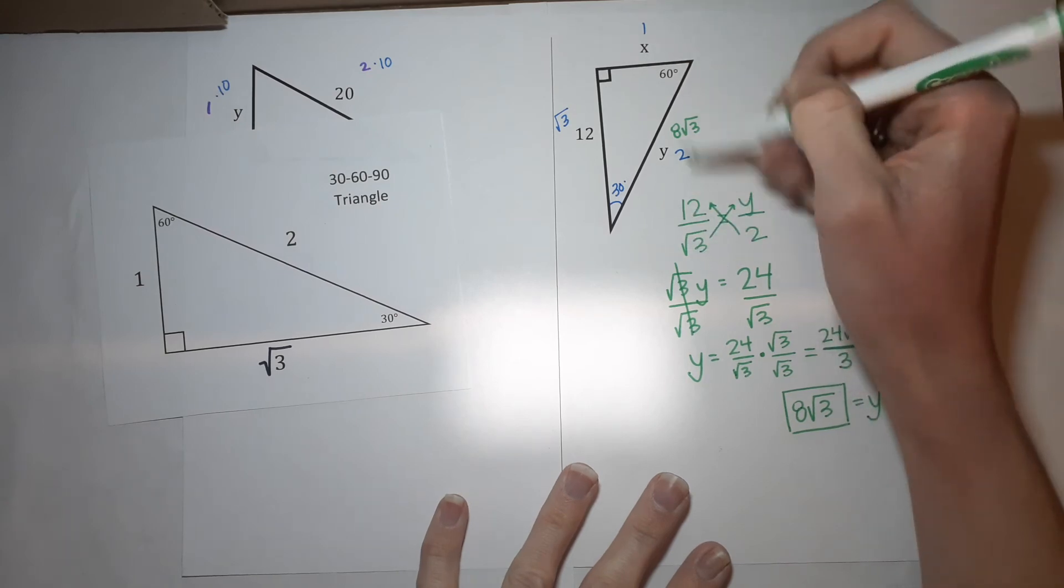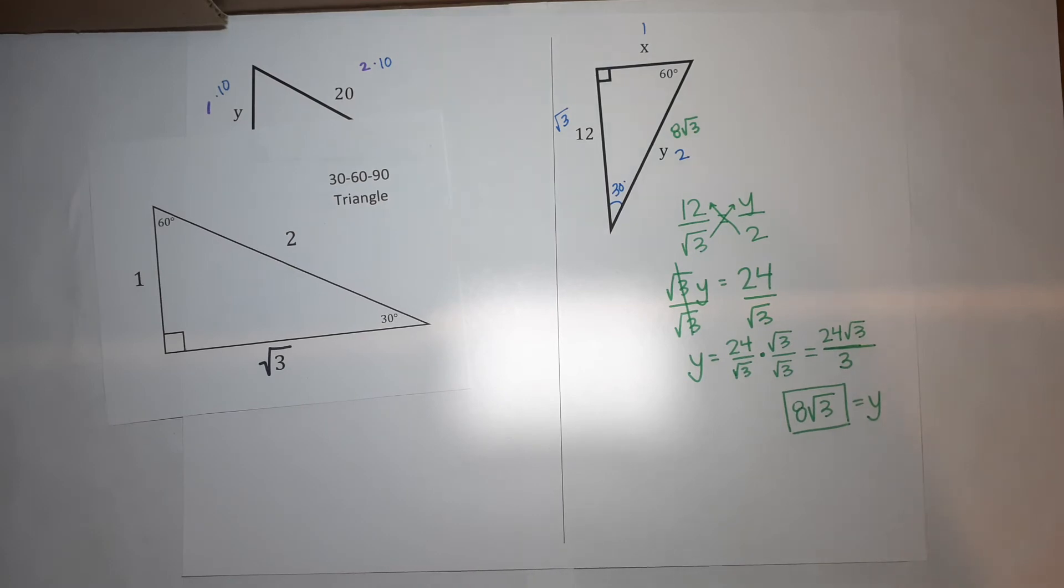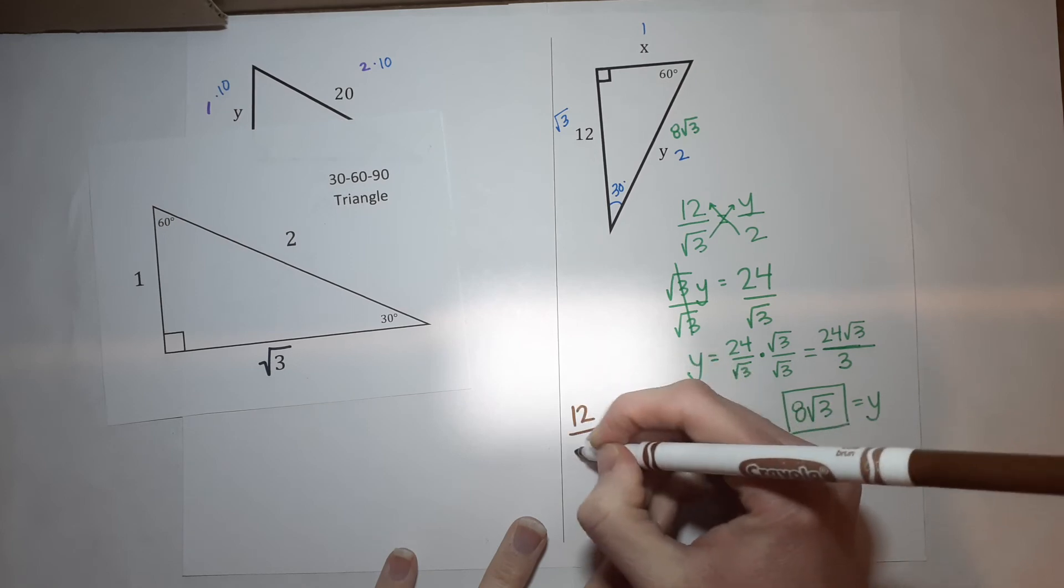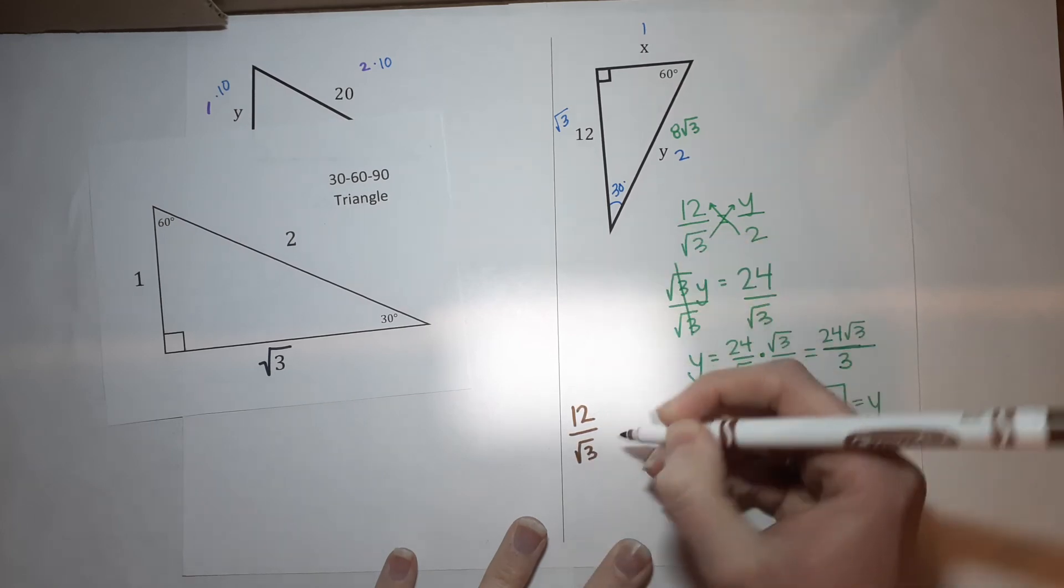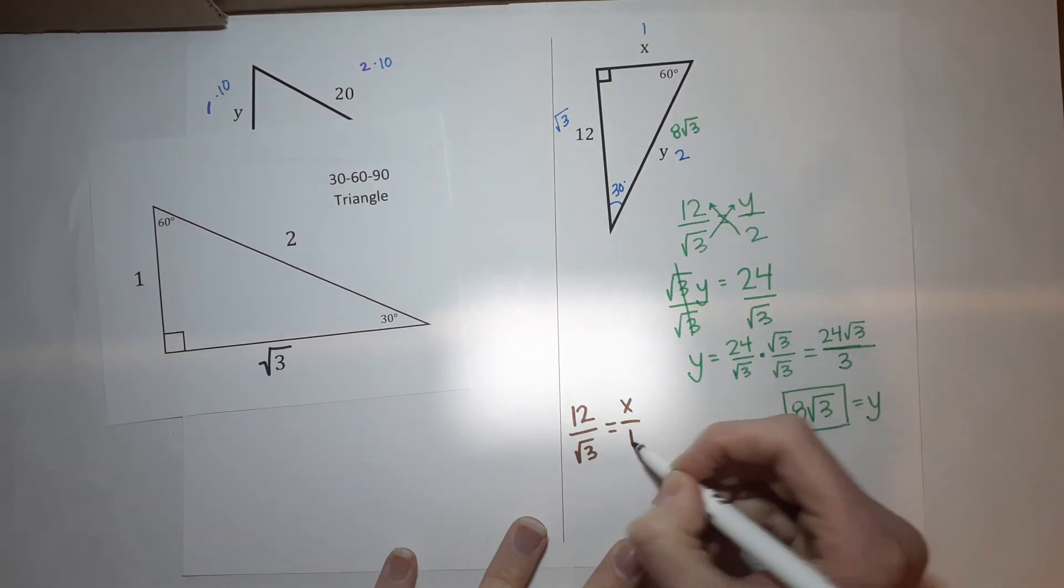Again, we can use the same one here. So 12, I'm going to use a different color because this makes it easier to keep them separated. So 12 is related to the square root of 3 the same way X is related to 1.